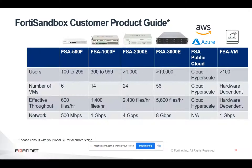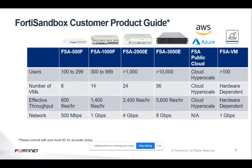Fortinet Sandbox has a product portfolio available in hardware form, and also on Azure, AWS, and as a VM. The FSA-500F, for example, supports 600 files per hour throughput. There is also a network throughput spec for sniffer mode, where you can configure a port mirror and send all traffic to Fortinet Sandbox. This sniffer capability is also covered in the lab.